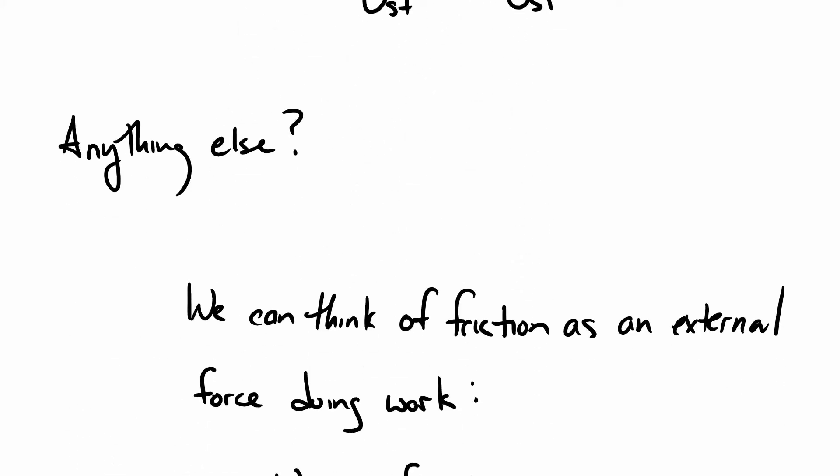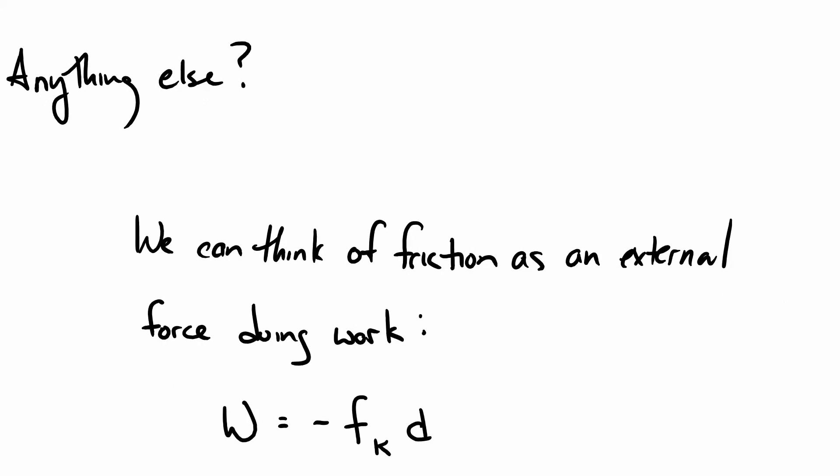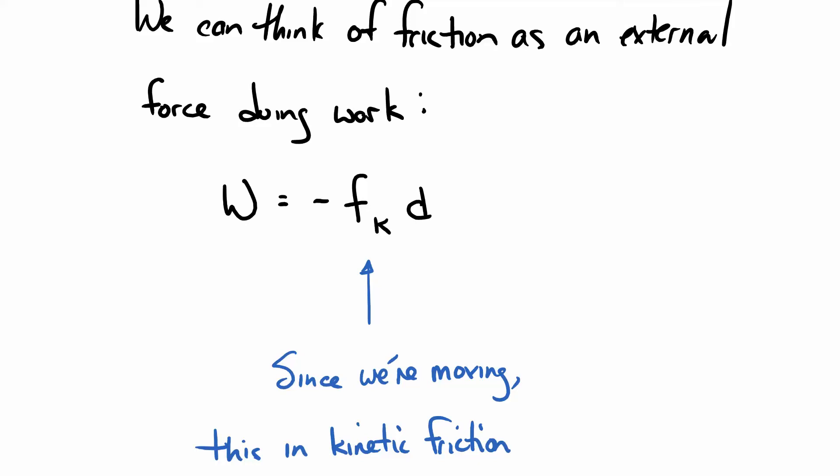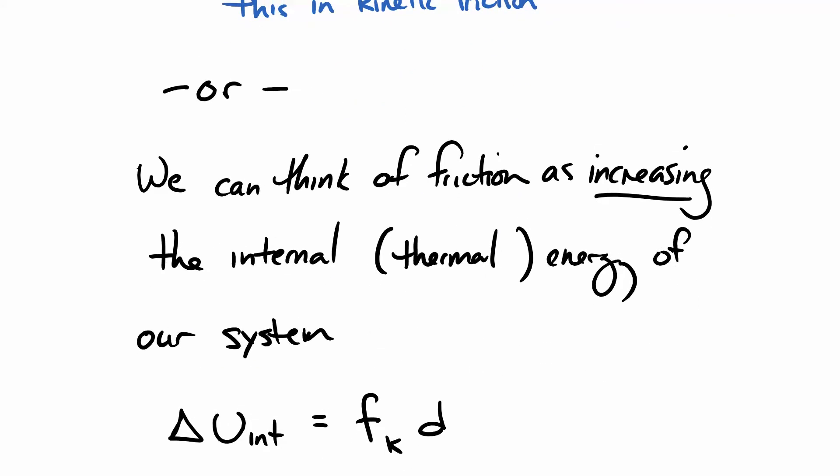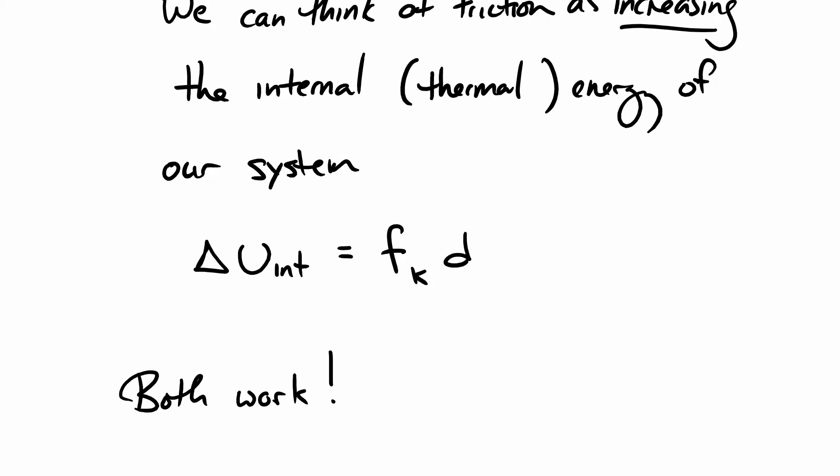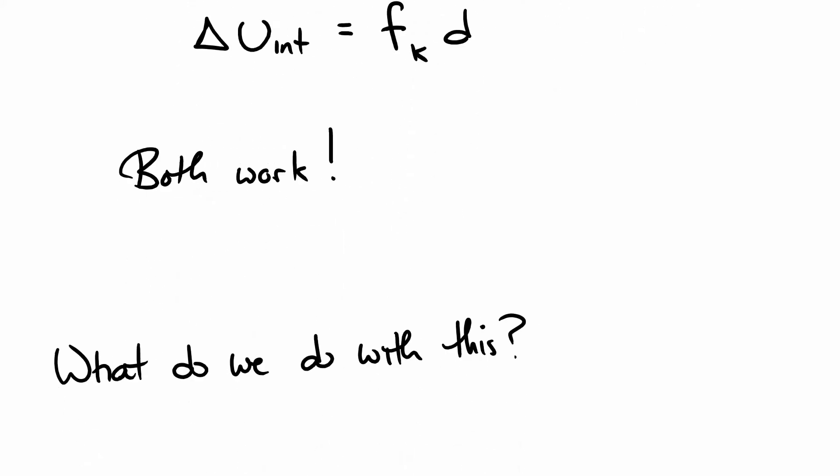Anything else? Well, we can think of friction as an external force doing work. So work is equal to minus F_k d. Specifically, this is kinetic friction. We don't really talk about types of friction too much this year, but if you want to be particular. Just a constant force doing work, so Fd. It's always negative because it's always in the opposite direction of motion that friction acts. Or, we can think of friction as increasing the internal, specifically thermal energy of our system. Works out of the way.